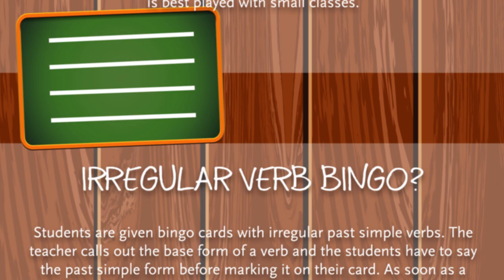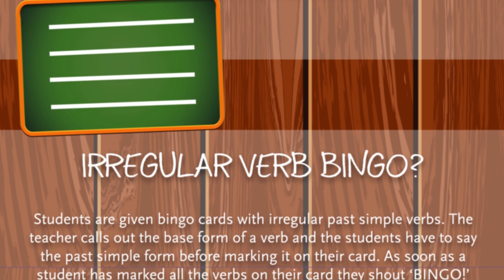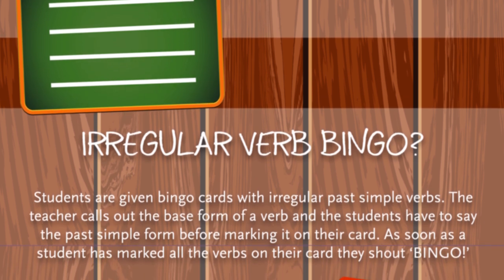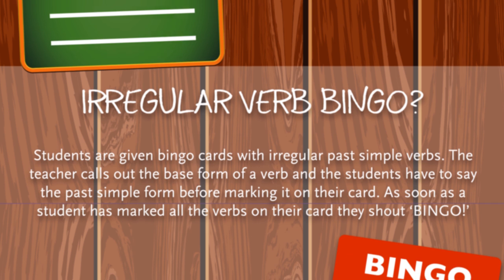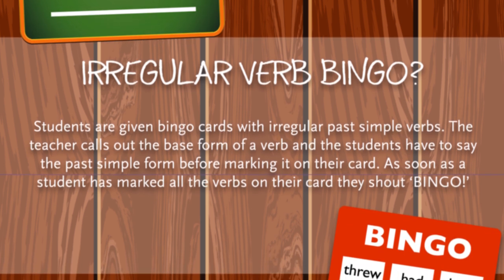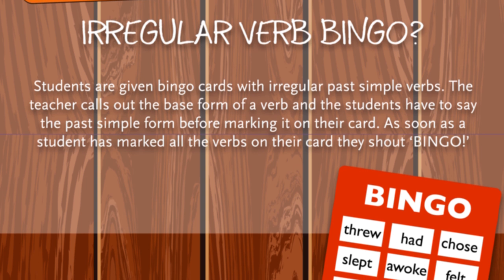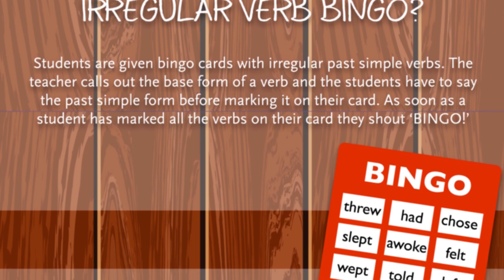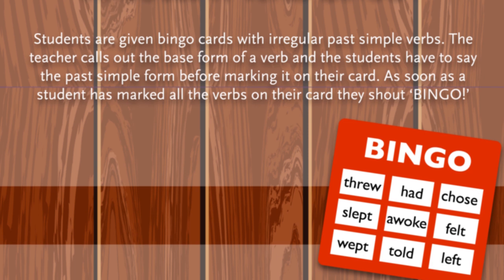Irregular Verb Bingo. Students are given bingo cards with irregular past simple verbs. The teacher calls out the base form of a verb and the students have to say the past simple form before marking it on their card. As soon as the student has marked all the verbs on their card, they shout 'BINGO!'